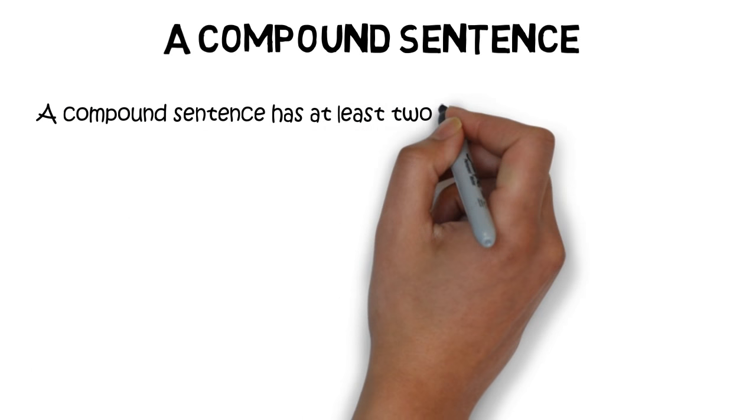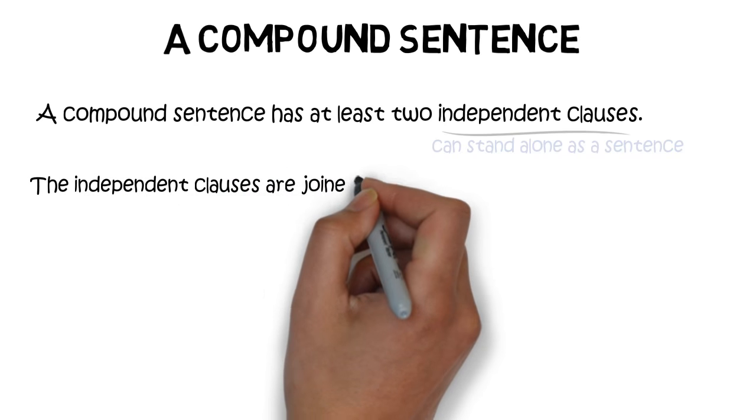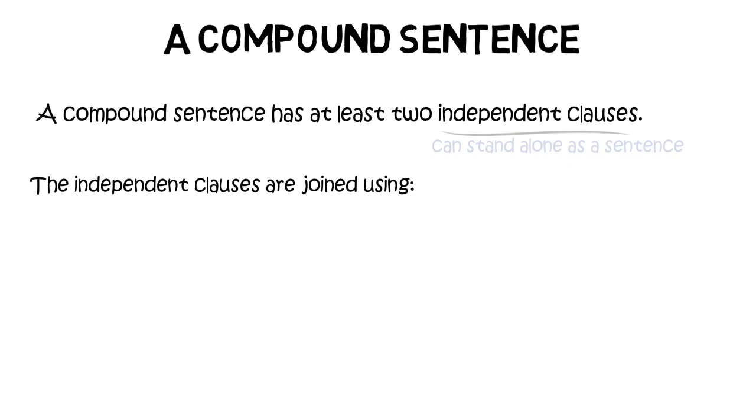A compound sentence has at least two independent clauses. Now an independent clause is one that can stand alone as a sentence. The independent clauses in a compound sentence are joined using one of the following methods. A conjunction with a comma, and that's words like for, and, nor, but, or, yet, and so, and the mnemonic fanboys will help you remember those.